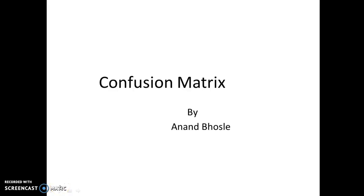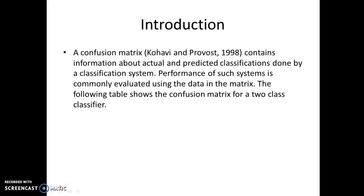Welcome to the lecture on Confusion Matrix. Confusion Matrix is the conventional method of computing the performance of a classification algorithm, where we represent predicted values and actual values in rows and columns. Confusion Matrix contains information about actual and predicted classifications done by classification algorithms. Performance is commonly evaluated in matrix form, which we call the Confusion Matrix.